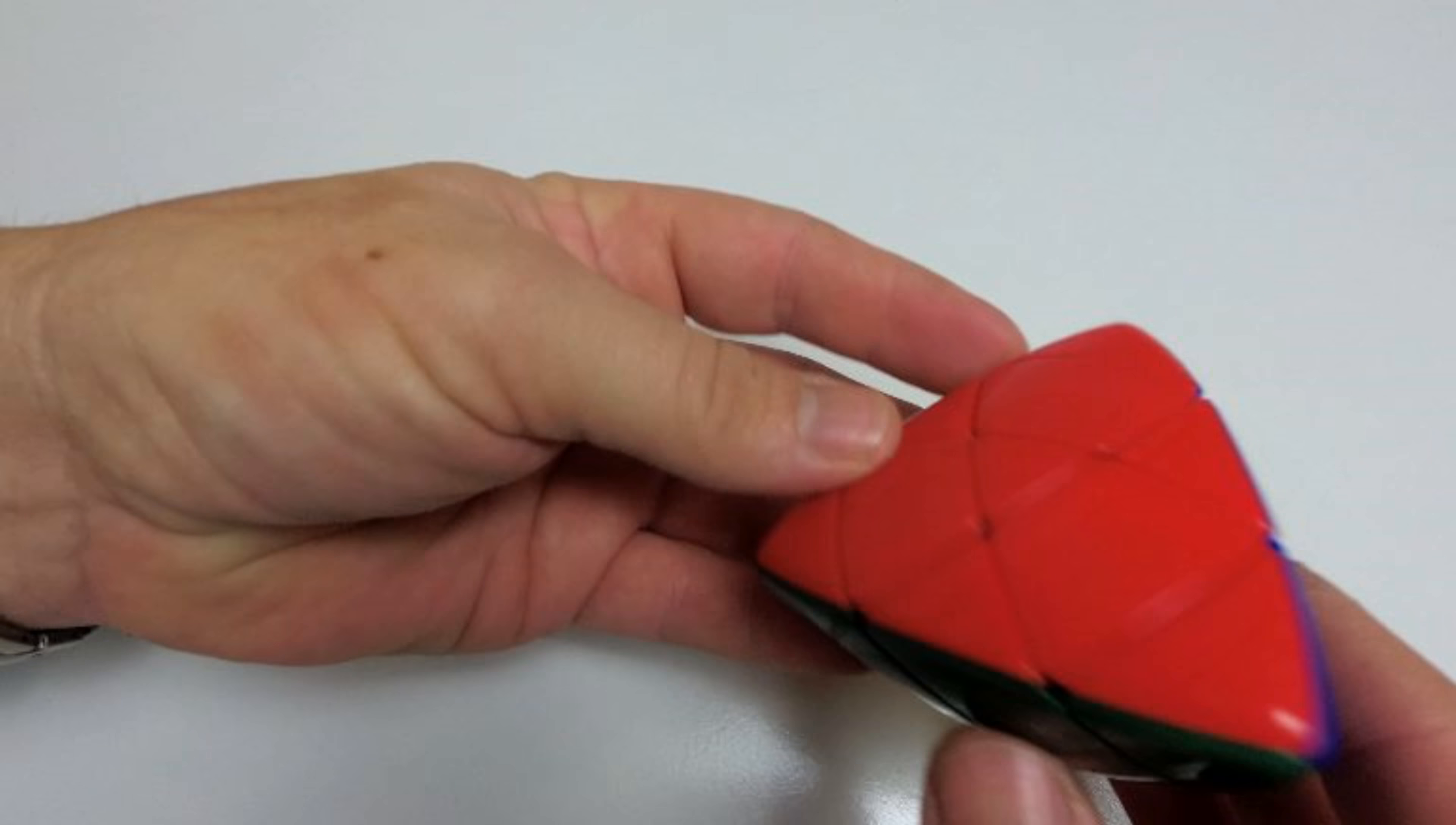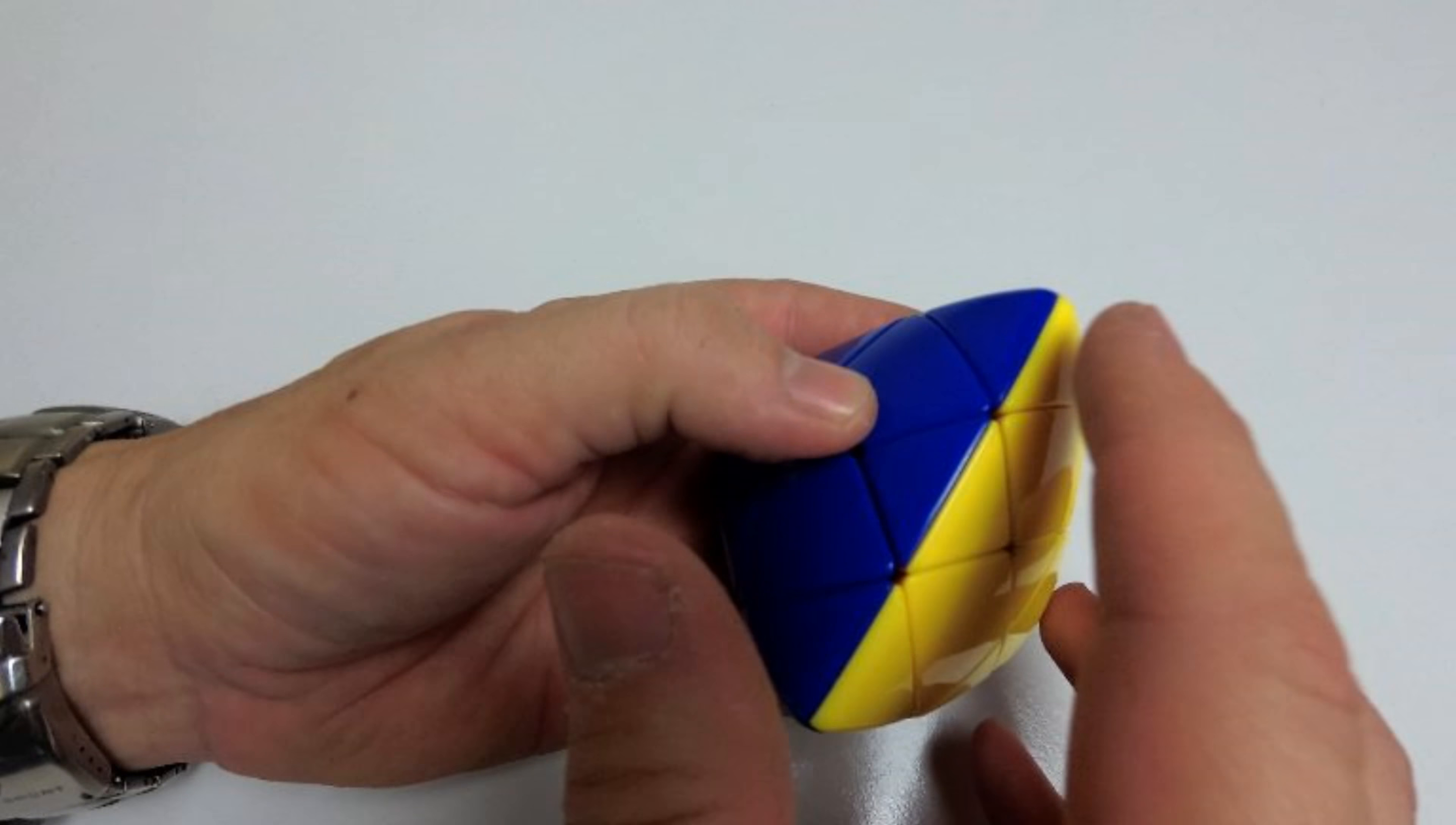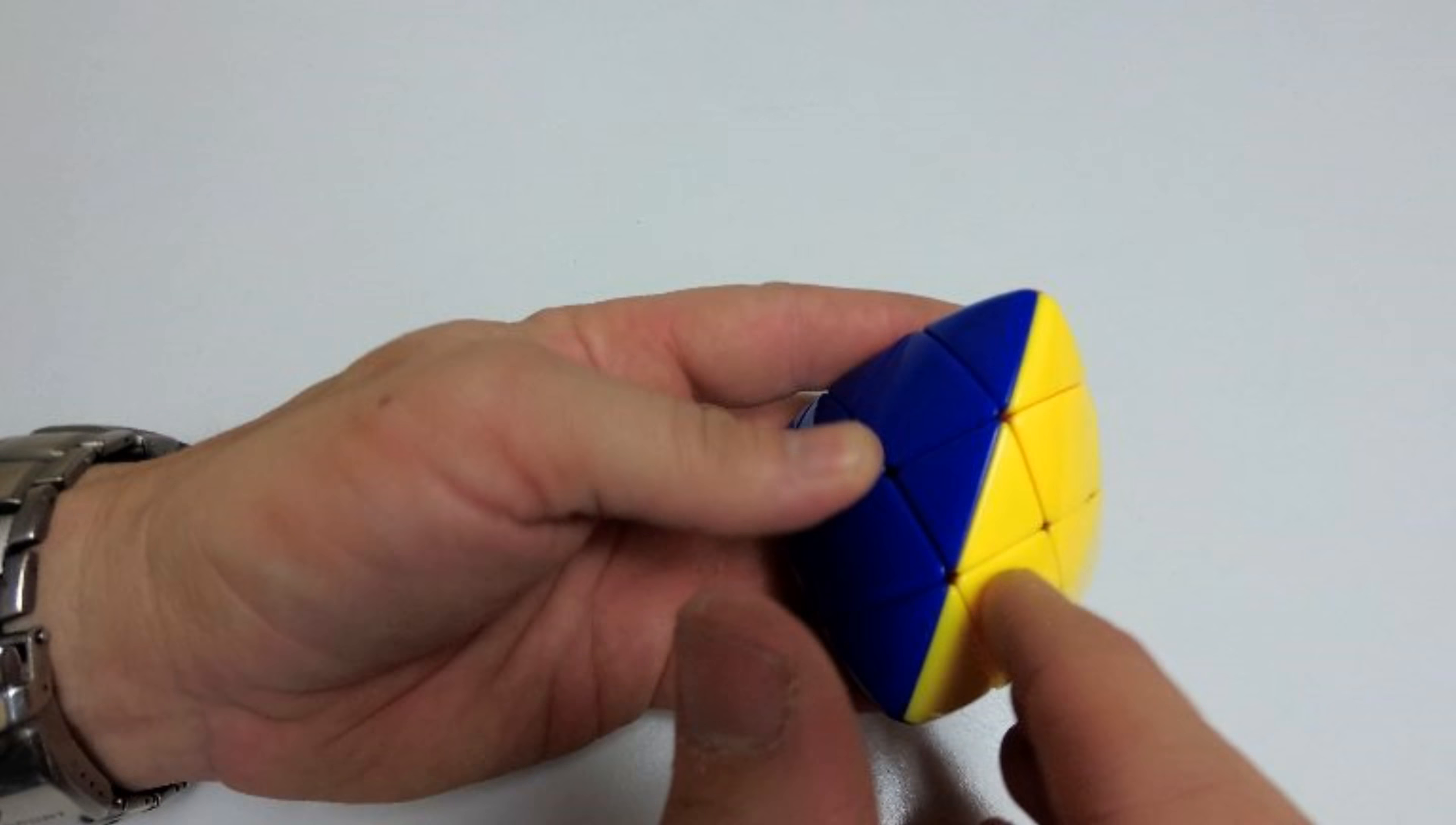So I'll just pull it apart and show you what it looks like inside. It's not like a normal 3x3 where you magnetise the corner pieces, because here, this piece here would be a corner piece and you can't get a magnet in there. So I've had to magnetise it through the centres.